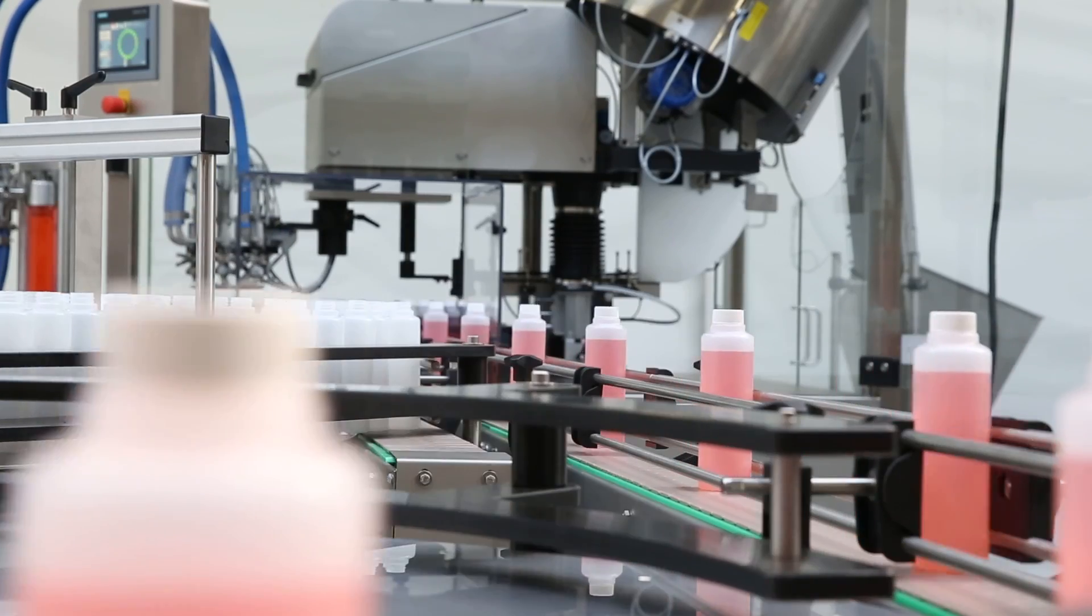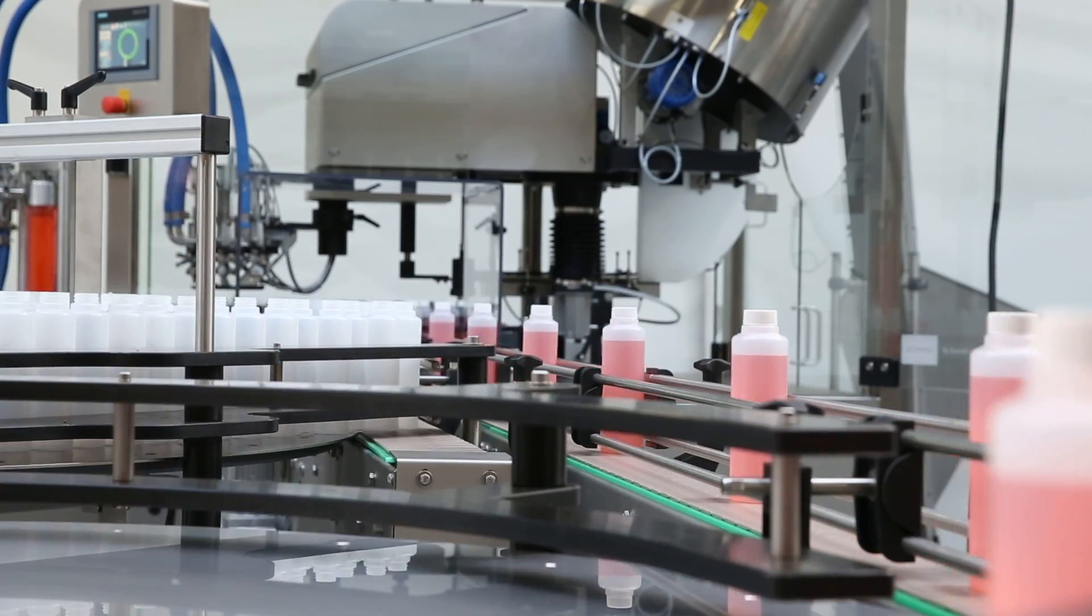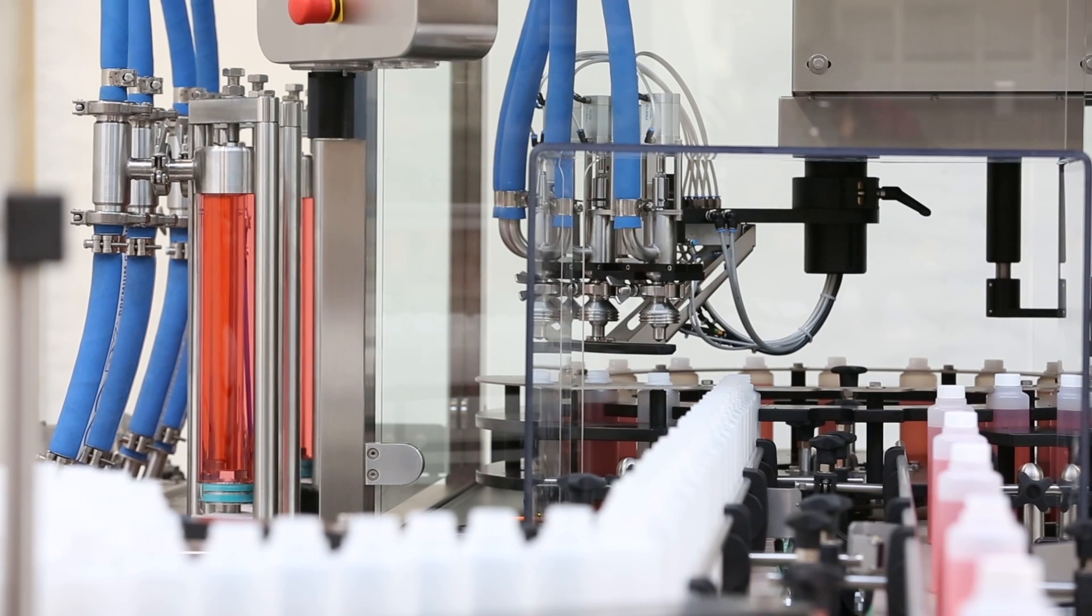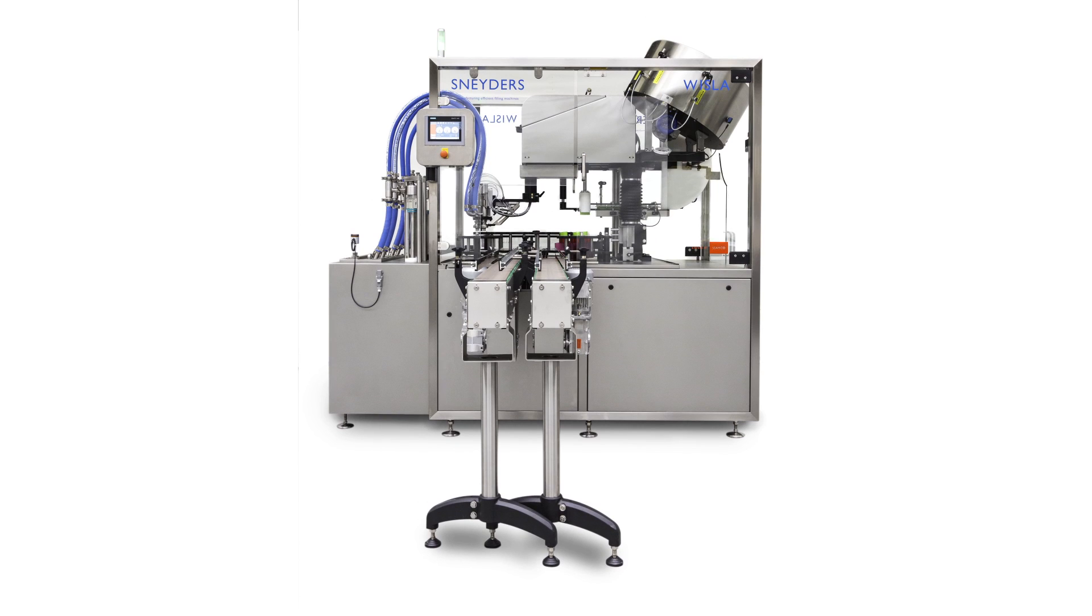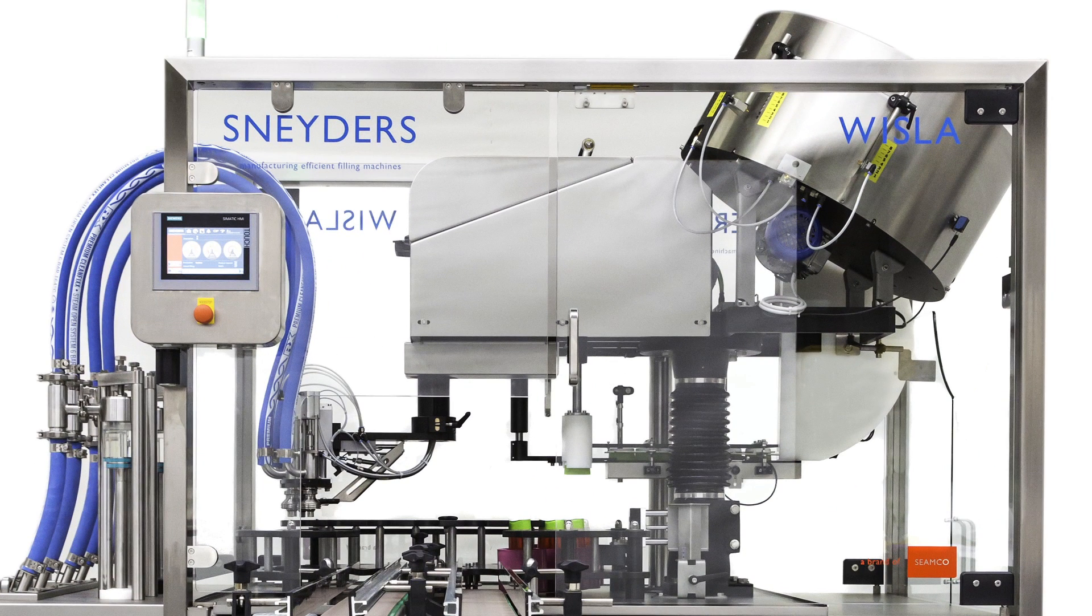With a capacity of up to 3,000 BPH and a floor space of only 4 square meters, the Wisler is a very versatile and efficient Filler Capper monoblock, especially for bottle formats between 50 and 1,000 milliliters.